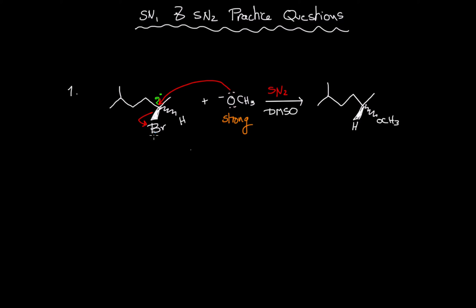Looking at the configuration, I can say that priority one is here, this carbon would be two, this methyl would be three, and the hydrogen will be four. Going one, two, three, four — I'm going clockwise, therefore this is R. However, looking at the product: priority one, priority two, methyl is priority three, and hydrogen is priority four.